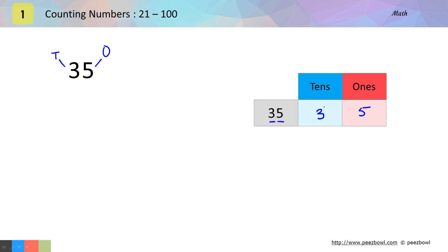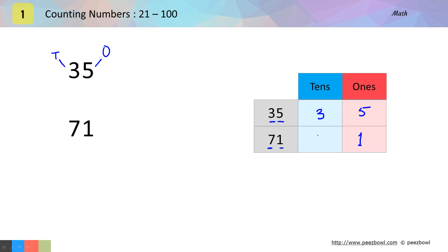Let us take one more example. I hope you can identify this number — this number is 71. We will follow the same rule. We have number 1 on the right hand side, so it will go at the 1s place — I write number 1 here. And number 7 is on the left hand side, so I write 7 at the 10s place.